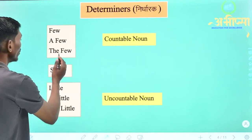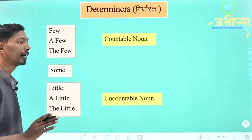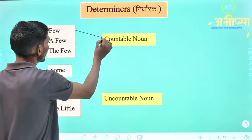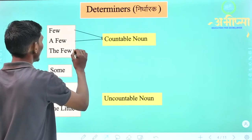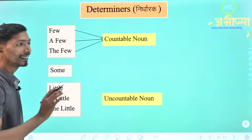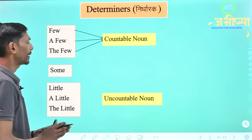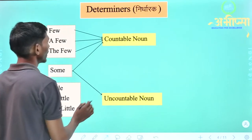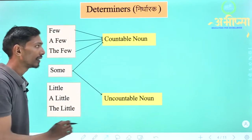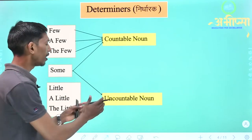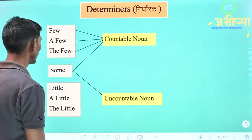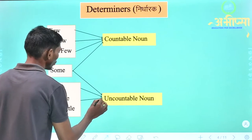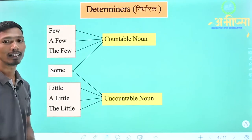Few ka matlab hota hai 'kuch', some ka bhi matlab hota hai 'kuch', and little ka matlab bhi hota hai 'kuch'. Few ka use hum countable noun ke saath karte hai. A few ka use bhi countable noun ke saath, and the few ka use bhi countable noun ke saath karte hai. Some ka use countable noun and uncountable noun dono ke saath karte hai. Little ka use uncountable noun ke saath, a little ka use uncountable noun ke saath, and the little ka use bhi uncountable noun ke saath kiya jata hai.